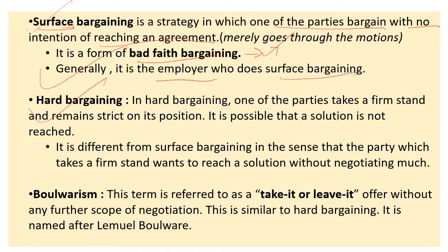In hard bargaining, one of the parties takes a firm stand and remains strict on its position. This is normally done by employees, though sometimes by employers too. Boulwarism is also a form of hard bargaining — it is a take-it-or-leave-it offer without any further scope of negotiation. It is named after Lemuel Boulware.